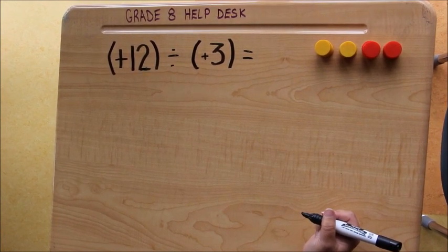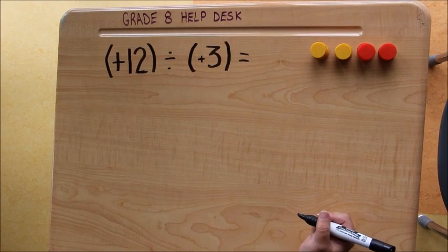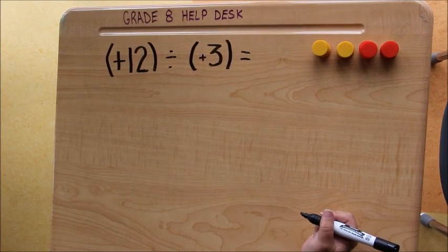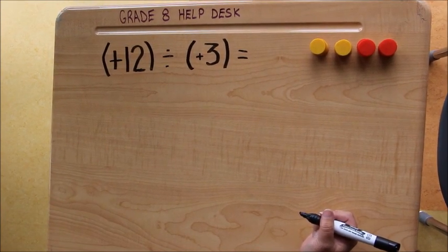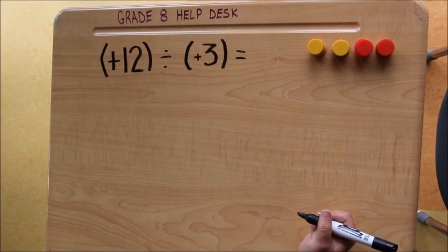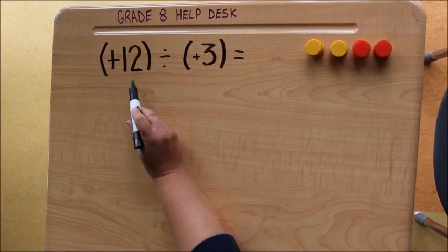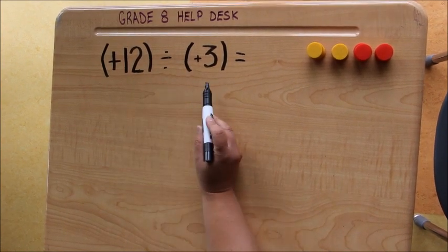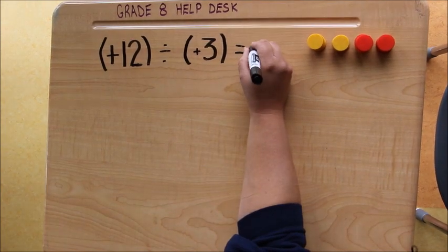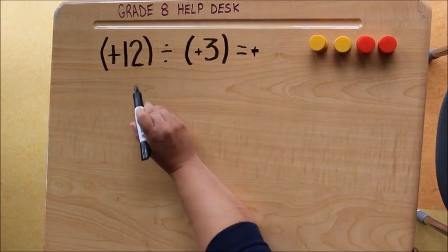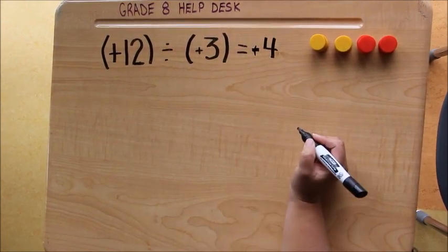When we look at a division question, we're first going to look at the numbers and what the numbers tell us. In this case, we know that when the signs are the same, our quotient will be positive. So we have positive 12 divided by positive 3, so our quotient will be positive. 12 divided by 3 is 4.